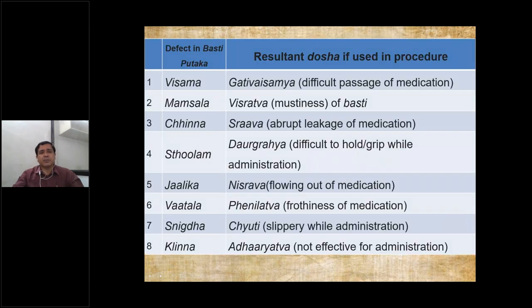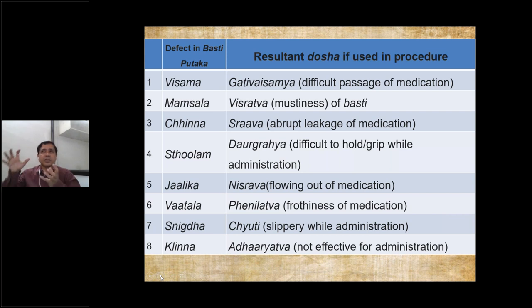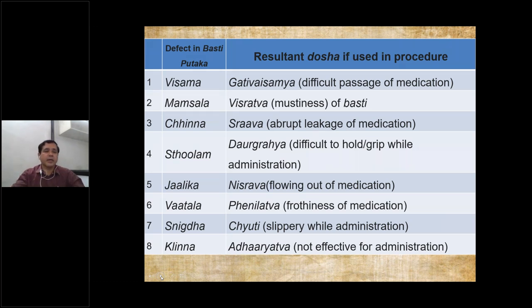By using Basti Putak, good enema pots are now available where we can control with the nozzle also and maintain proper flow — either on a saline stand or tied to the wall of the treatment room. In South India especially, plastic bags are widely used, which are very easy for administration and use.